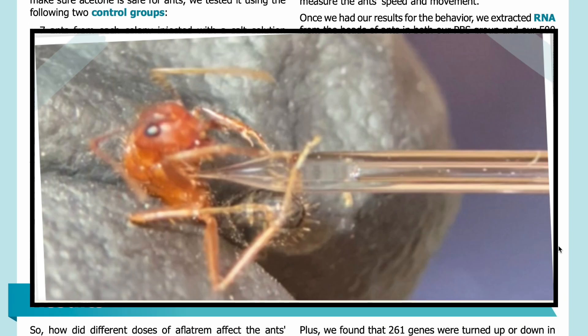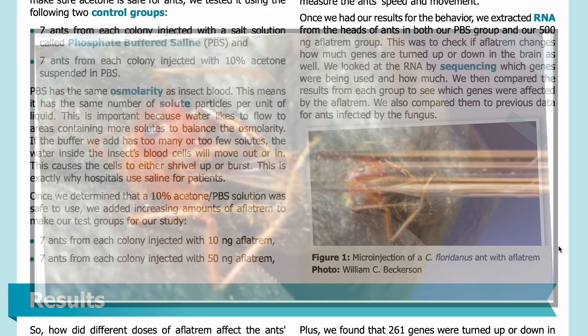Here in Figure 1, you can see a microinjection of a C. floridanus ant with aflatrem. In the center of the image, you can see the ant being held by gray gloved fingers. The injector is coming from the right of the image and piercing the ant's thorax. The microinjector looks like a glass tube.